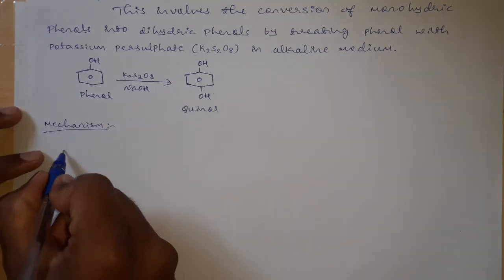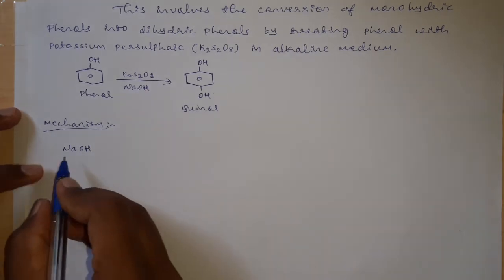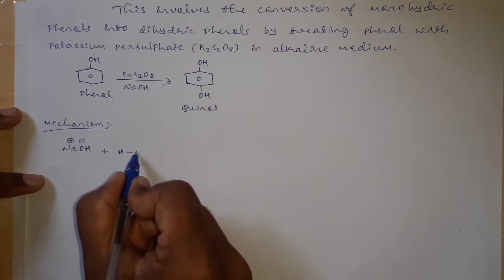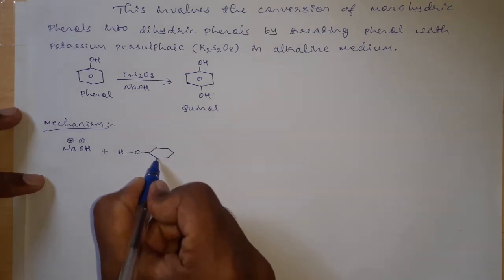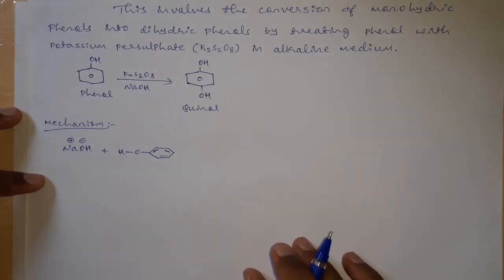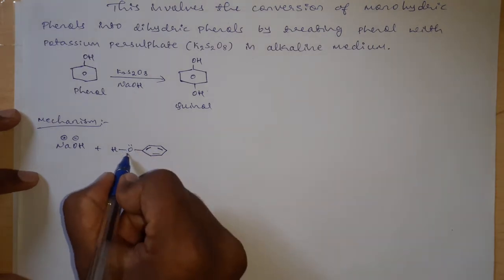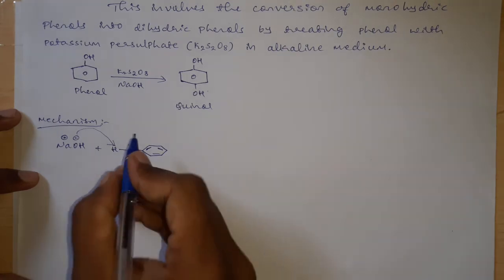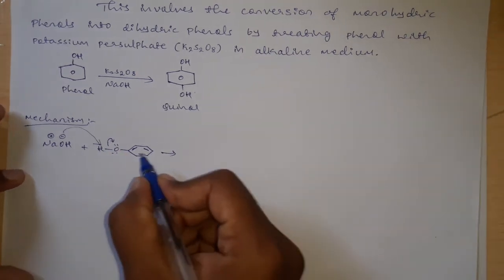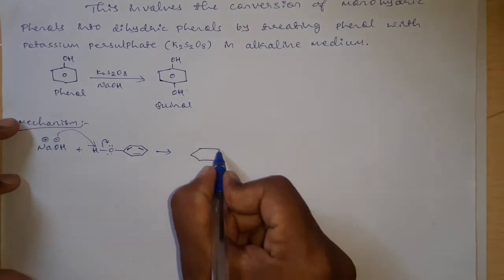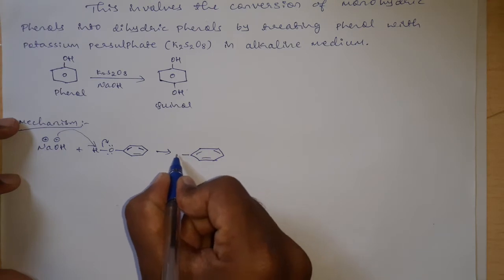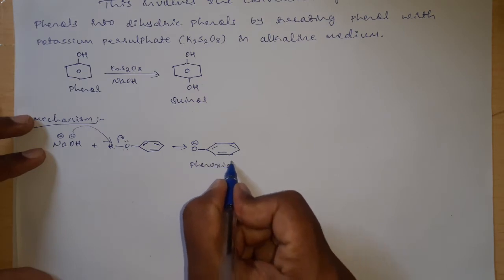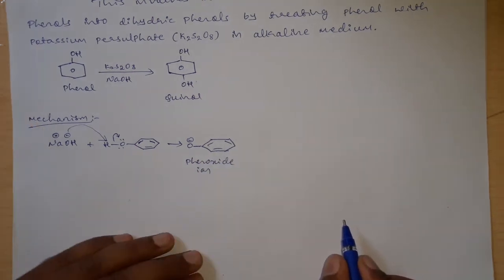Coming to the reaction mechanism: we know that NaOH dissociates as Na+ and OH−. When treated with phenol, the OH− will abstract the proton from the phenolic OH group. This bond shifts toward the oxygen, producing O−. This species is called the phenoxide ion.